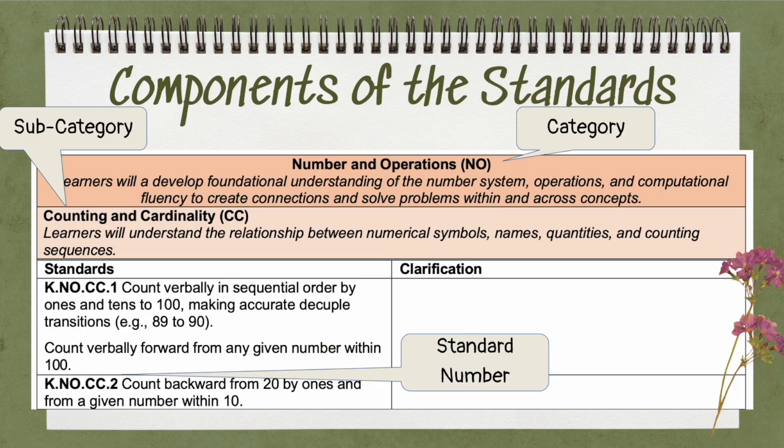Before we get started, we should take a look at the components of a standard. The new standards are written such that we look at the category. In this particular one, when looking at kindergarten, we have number and operations, which is denoted with NO. Then we have the subcategory of counting and cardinality, CC, and we can drill down to the standard number itself.